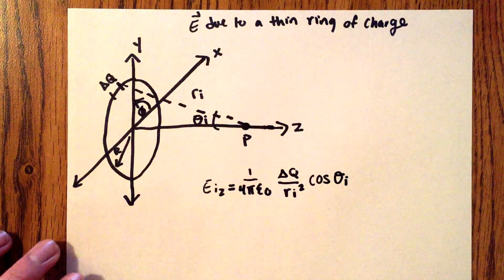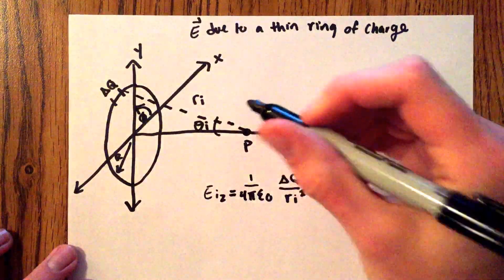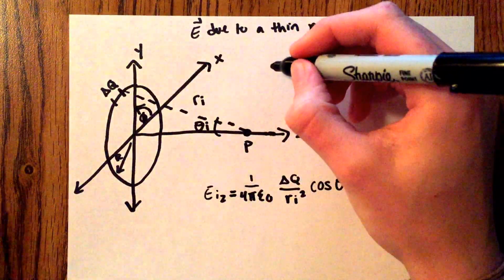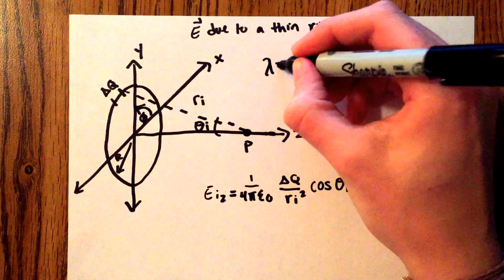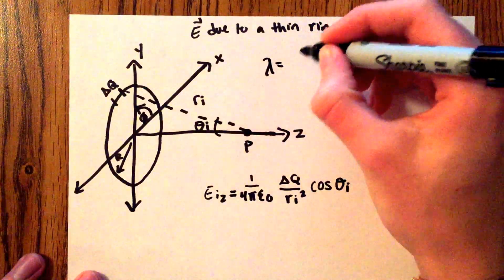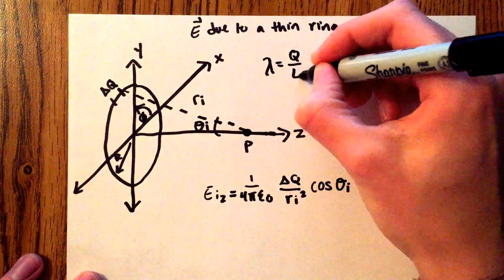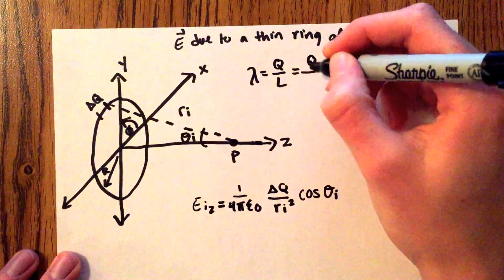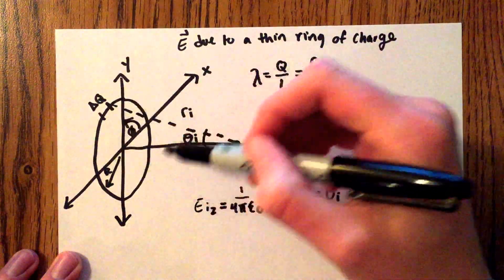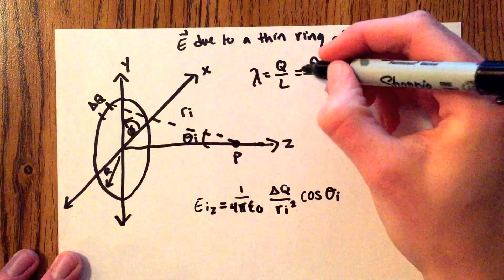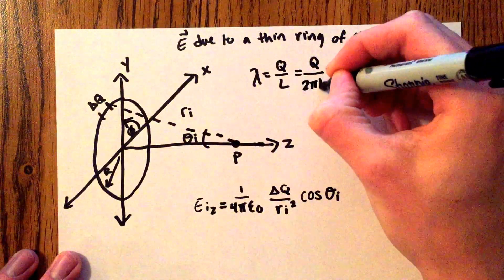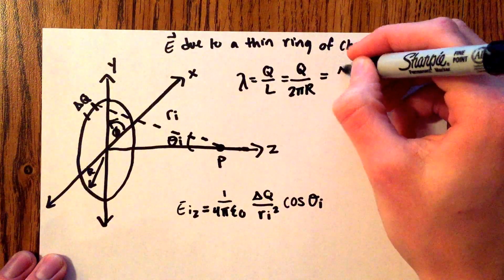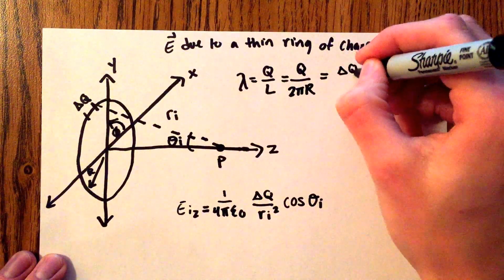Now we can make some substitutions. We have to take into account the linear charge density of the ring. So we can say that lambda is equal to the charge q over L, which in this instance is the circumference of the ring, so that'll be 2 pi r.